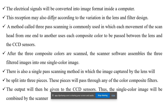After the three composite colors are scanned, the scanner software assembles the three filtered images into one single color image. There is also a single-pass scanning method, in which the image captured by the lens is split into three pieces, each passing through a color composite filter. The output is then given to the CCD sensors, and the single color image is combined by the scanner. This completes the working process of flatbed scanners.